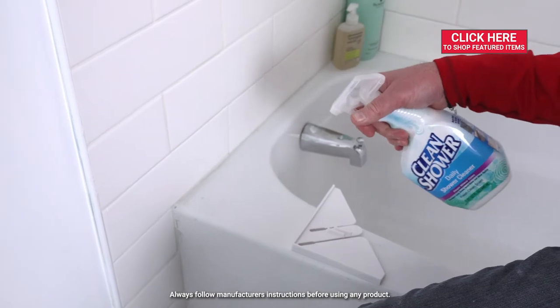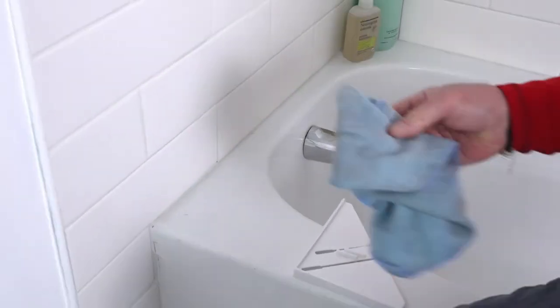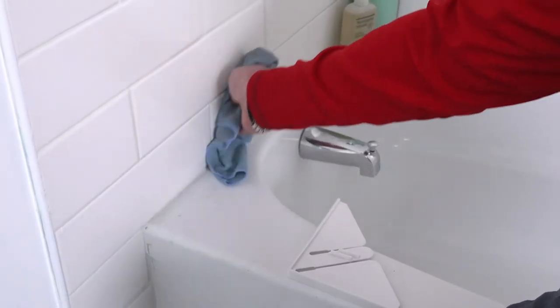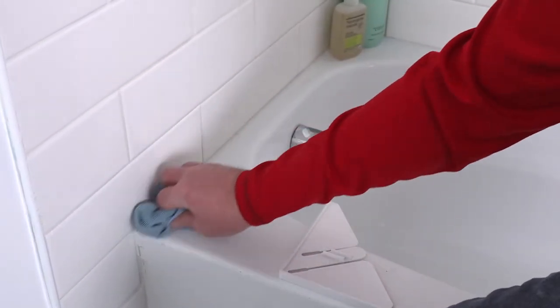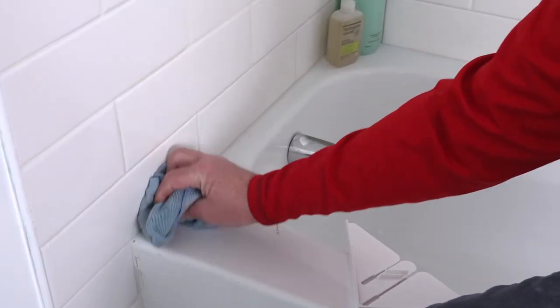I'm going to take a little cleaner and spray it on the wall and on the tub where the splash guard is going to go. Let the cleaner sit there for a few minutes and then wipe that away. You want that to be as clean and as dry as possible.